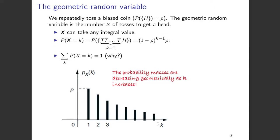For example, let's assume that you repeatedly toss a biased coin where the probability of getting a head is p and the probability of getting a tail is hence 1 minus p. The geometric random variable is the number of tosses — which we denote by X — to get a head. As you can clearly understand, X can take any integral value, like 1, 2, and so on. Now the probability of X equal to k is getting k minus 1 tails and then a head, because it is the number of tosses to get the first head. So you're getting k minus 1 tails in succession followed by a head.